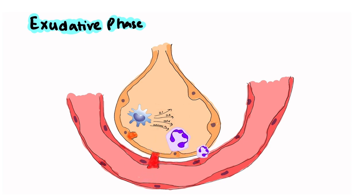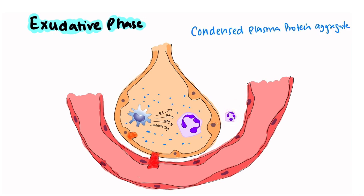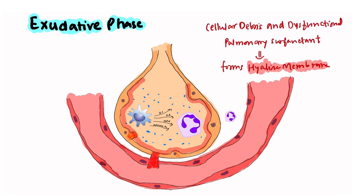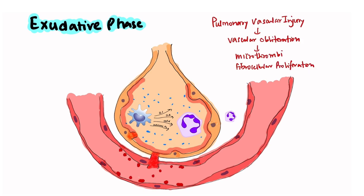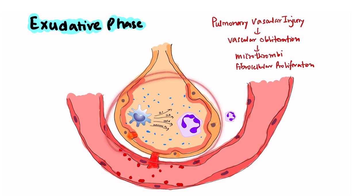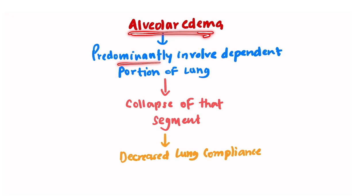Due to these cytokines, leukocytes — especially neutrophils — are recruited into the alveolar space and interstitium. Condensed plasma proteins accumulate in the alveolar space, and cellular debris along with dysfunctional pulmonary surfactant form a hyaline membrane. Pulmonary vascular injury may cause vascular obliteration in the form of microthrombi and fibrocellular proliferation. All these exudates accumulate around this space, which is why it is called the exudative phase.